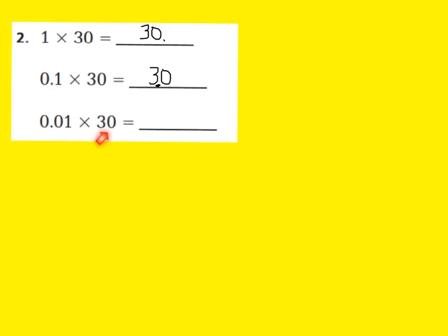In the same way, if I were to multiply 30 by 1 hundredth, I would need to move my decimal point two places to the left. So let's go ahead and write the number 30, and now let's place our decimal point. It normally would be right here, but we're going to move it two places to the left, which means our decimal point will go right here. Now we would call this 30 hundredths, or we can call it 3 tenths. Remember, 30 hundredths is equivalent to 3 tenths.